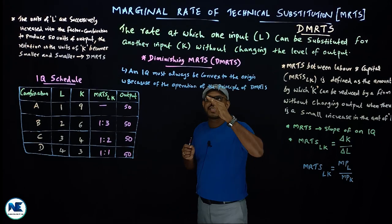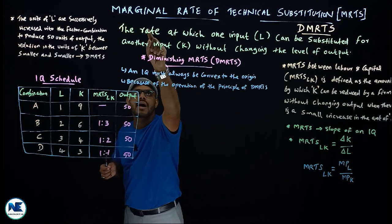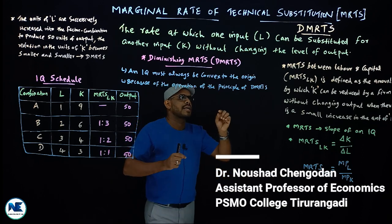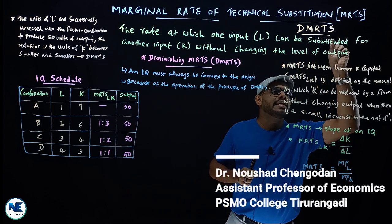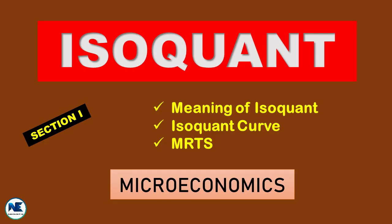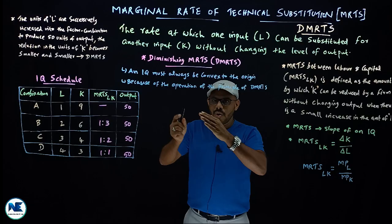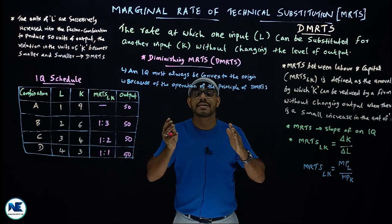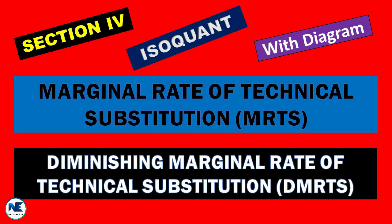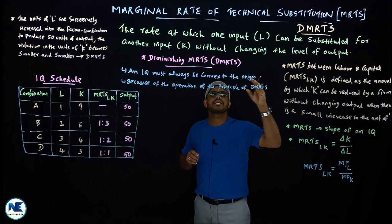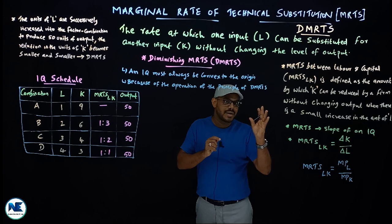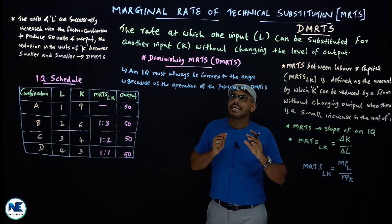Hi friends, welcome back. Today's topic is Marginal Rate of Technical Substitution, that is MRTS. This is related to the isoquant area — a very important topic. We know the indifference curve where we have already discussed marginal rate of substitution. Today we'll compare that and discuss what is the meaning of MRTS, the slope of an isoquant, and the formula.